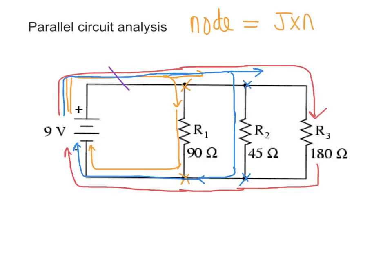Good, hopefully you picked this little segment here before the first node, and this segment here after the last node, the last junction. You can see that those currents are the same because they are made up of all three branches, the gold, the blue, and the red.